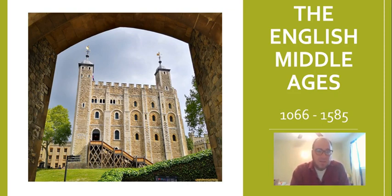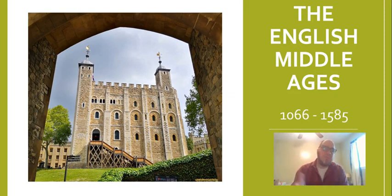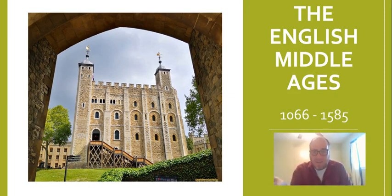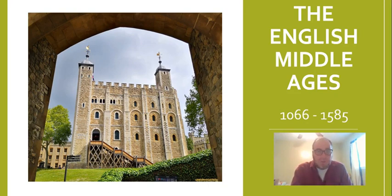Harold Godwinson was the most powerful man in England at the time. He and his father had both been advisors to the king, so it made sense for the council of noblemen to elect him king. He was crowned the last Anglo-Saxon king of England because he didn't have any blood ties to the throne. There were a couple of people who did have blood ties to the English throne, and they wanted it.